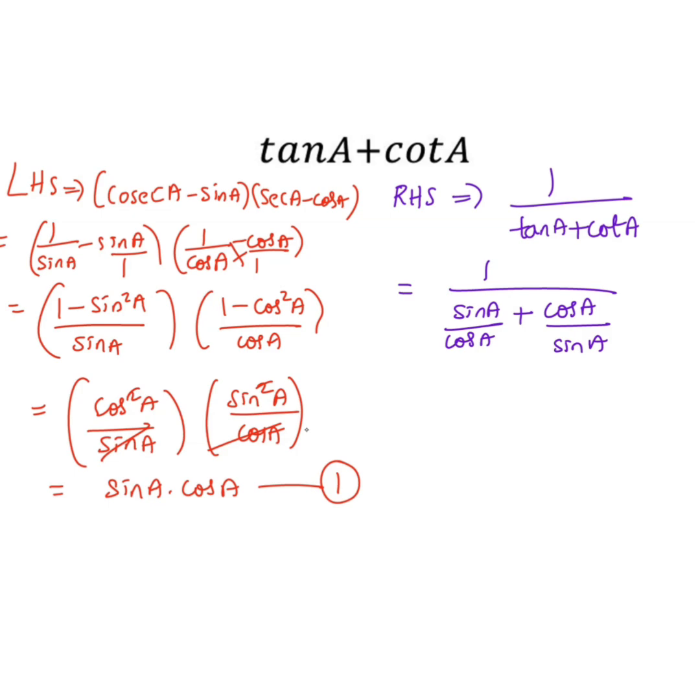By doing cross multiplication, we get 1 by sin square A plus cos square A, divided by sin A cos A.